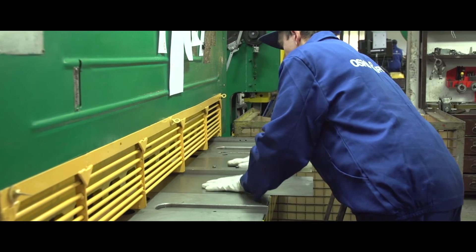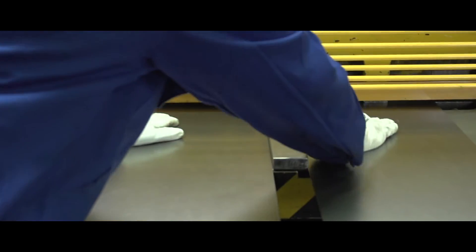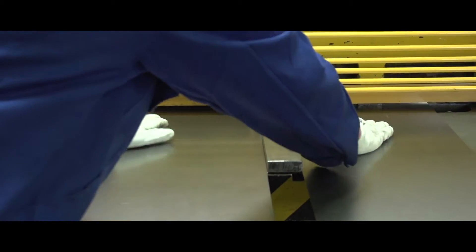Obróbka plastyczna to szereg procesów, które polegają głównie na deformowaniu materiałów. Tu powstają wszystkie detale, które są wykorzystywane do złożenia mechanizmów lub wyrobów.